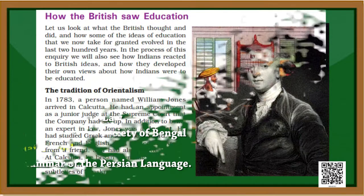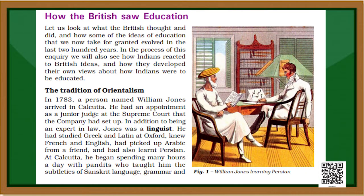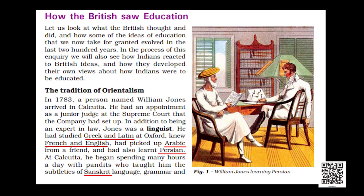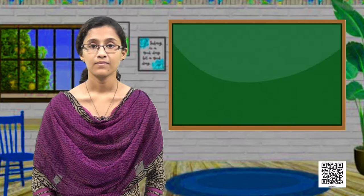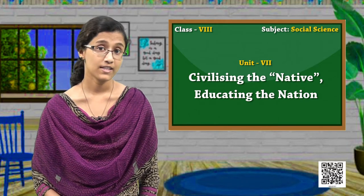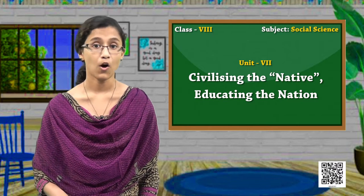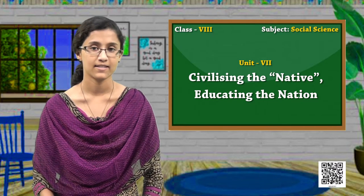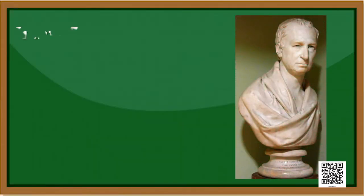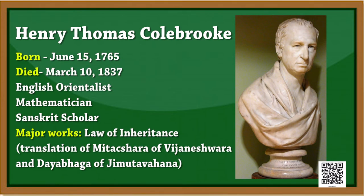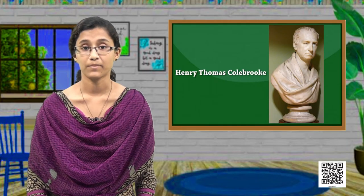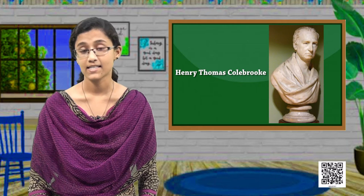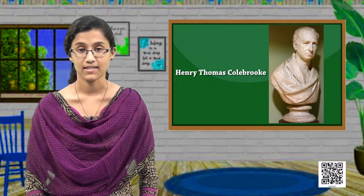William Jones knew Greek, Latin, French, English, Arabic, Persian, and Sanskrit. With the knowledge of these languages he was able to study Indian texts on law, religion, medicine, politics, and more. The next person is Henry Thomas Colebrook, a Sanskrit scholar and mathematician who studied Sanskrit and translated many Sanskrit texts. You may remember him from the textbook extract where he describes the conditions of under-tenants in the ryotwari system.